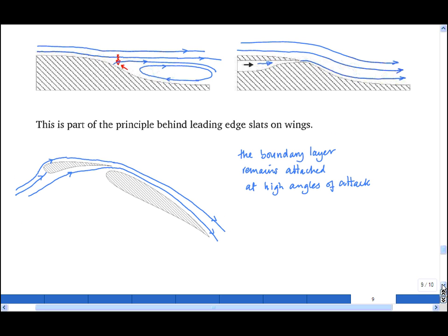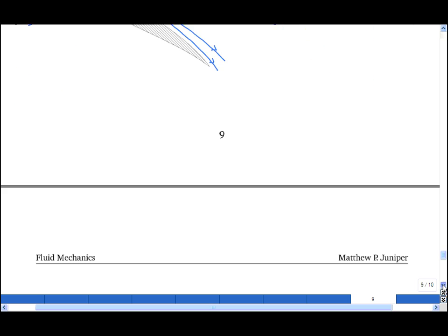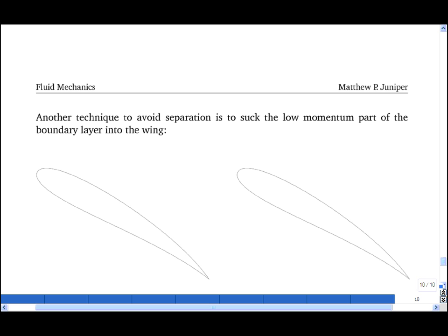Another technique to avoid separation of a boundary layer is to suck the low-momentum fluid out of the boundary layer. For example, a wing at high angle of attack might have streamlines looking like this. Around this point of the wing, the boundary layer flow is only just moving in the same direction as the free stream.